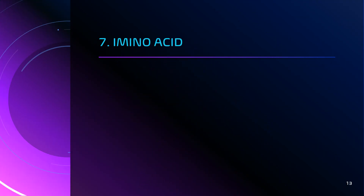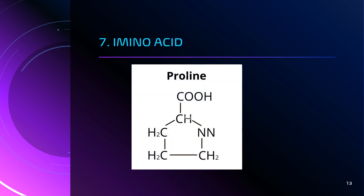The seventh and last category of structural classification contains only one amino acid: proline. The three-letter code is PRO and the single-letter code is capital P. Proline has a special pyrrolidine group. So far, we have understood the seven categories of amino acids based on structural classification — how their R groups are structured.